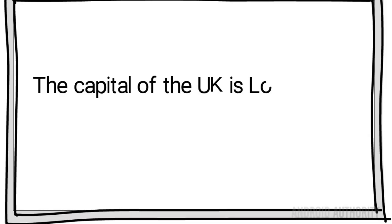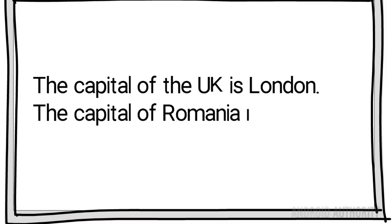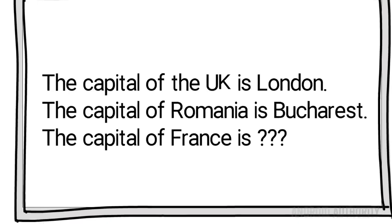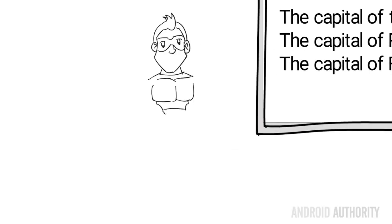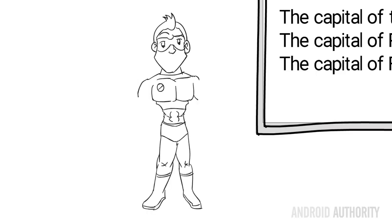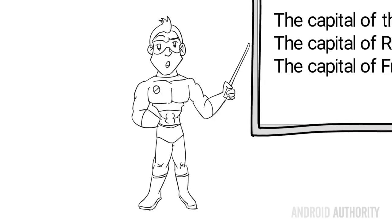The greater the data set, the more the machine can learn about the subject matter. After the machine is trained, it's given new, previously unseen data, and the learning algorithm then uses past experience to give you an outcome — this is the letter A, that is the UK flag, and so on.